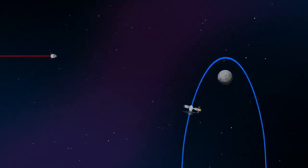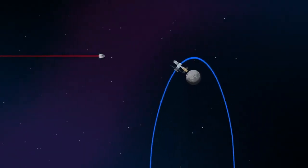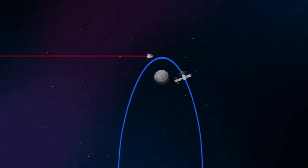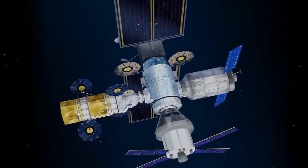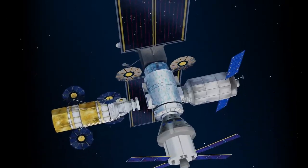Returning to our crew as they approach Gateway, the Orion must match the elliptical orbit of the station in order to successfully dock. Once on board, pre-selected crew members transfer to the lunar lander, while those assigned to Gateway remain on station.